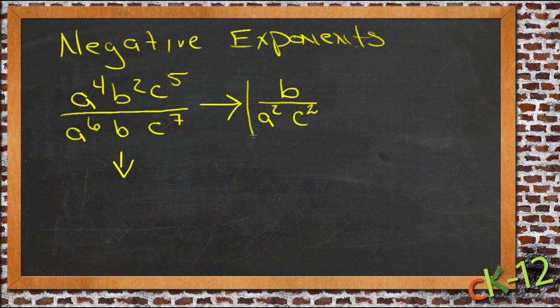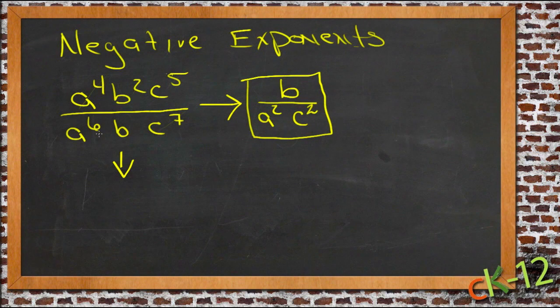Now another perfectly valid way to do this is to just use our rule for dividing exponents, and that is that when you divide exponents you subtract. If I do that, then I have a to the fourth divided by a to the sixth, so I subtract 4 minus 6 and I get a to the negative second. And I get b to the second divided by b, so I get 2 minus 1, that's just b. And 5 minus 7 also gives us c to the negative second.